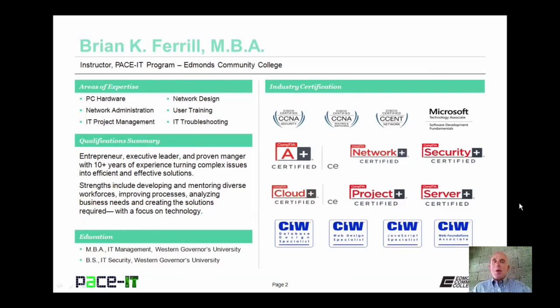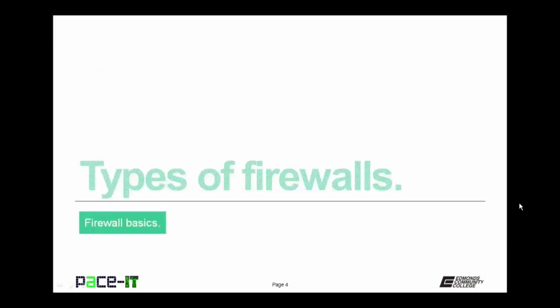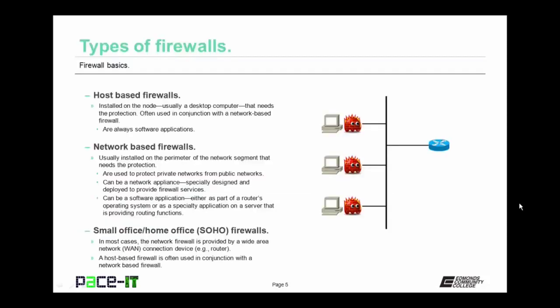Good day, I'm Brian Farrell, and welcome to Pace IT's session on firewall basics. Today I'm going to discuss types of firewalls, and then we're going to move on to firewall settings and techniques. I'm going to start with types of firewalls. First up are host-based firewalls. These are installed at the node, which is usually a desktop computer. They're often used in conjunction with network-based firewalls, and they are always software applications. Then there are network-based firewalls, usually implemented on the perimeter of the network segment that needs protection. They're used to protect private networks from public or outside networks. Network-based firewalls can be a network appliance or a software application.